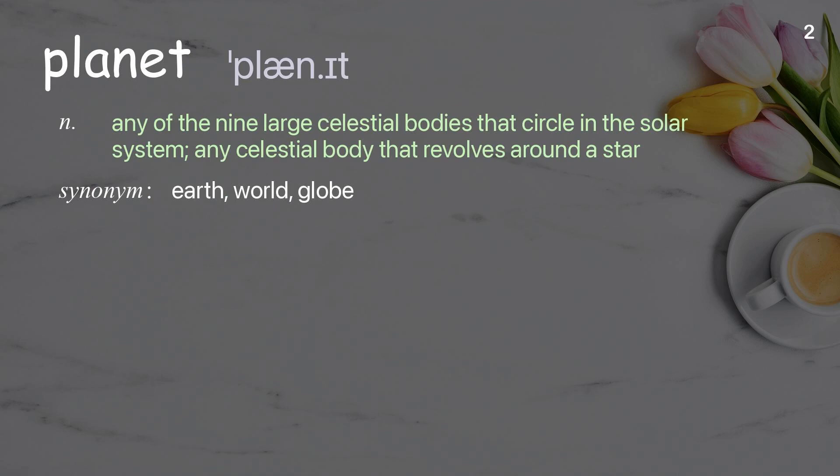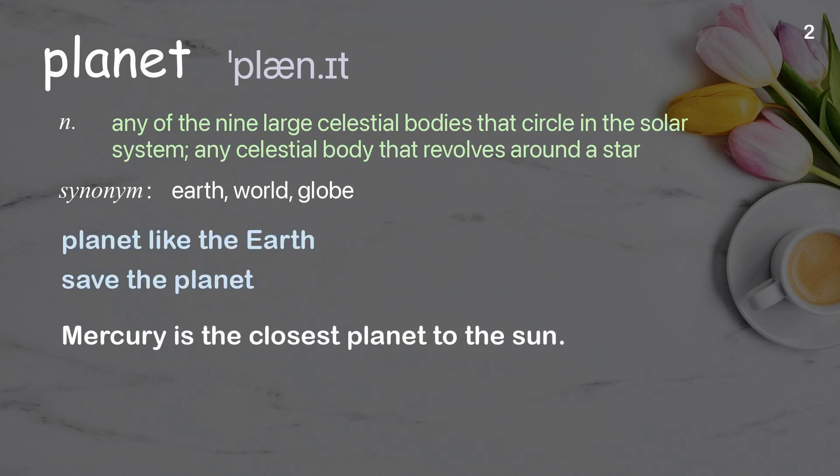Planet: any of the nine large celestial bodies that circle in the solar system; any celestial body that revolves around a star. Examples: planet like the Earth; save the planet. Mercury is the closest planet to the sun.